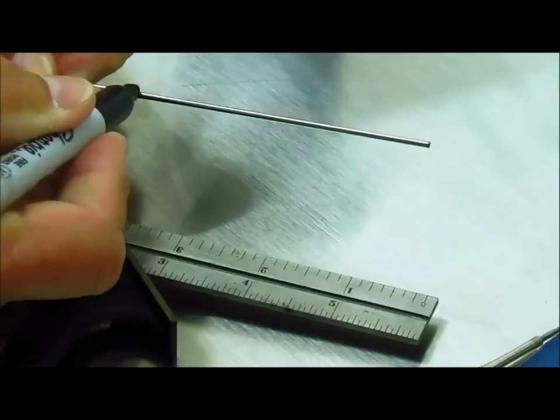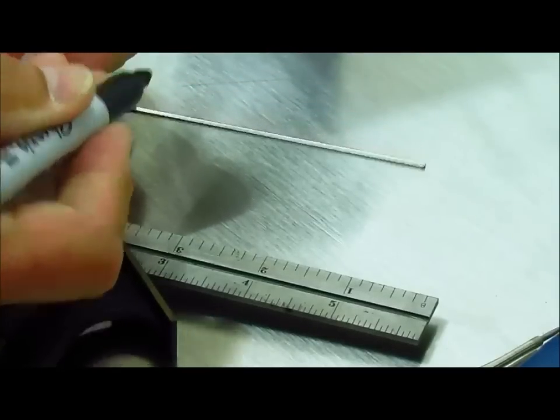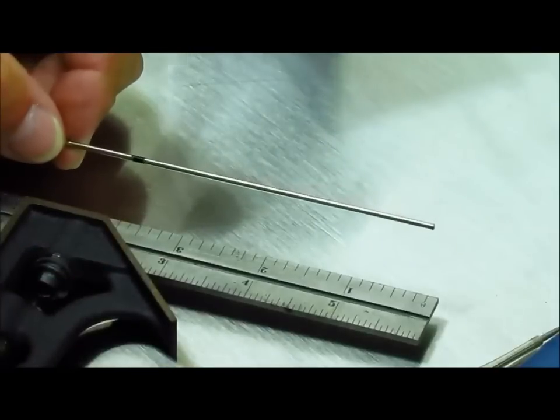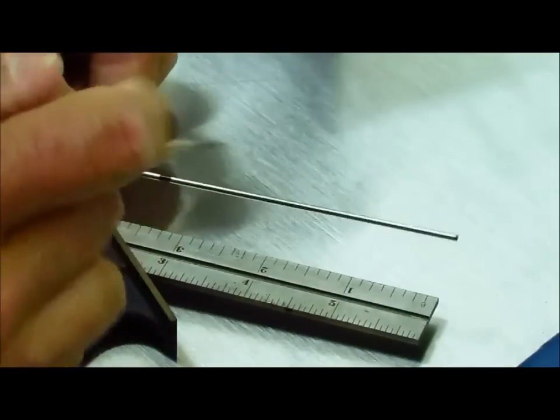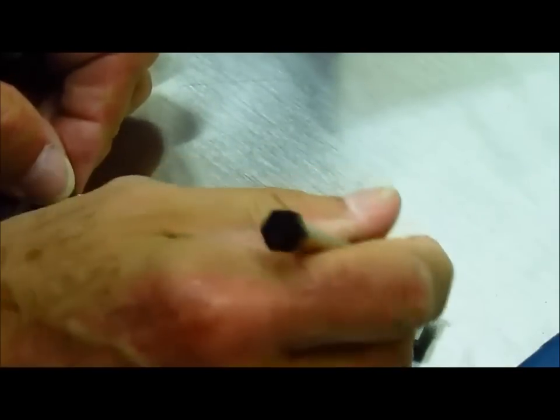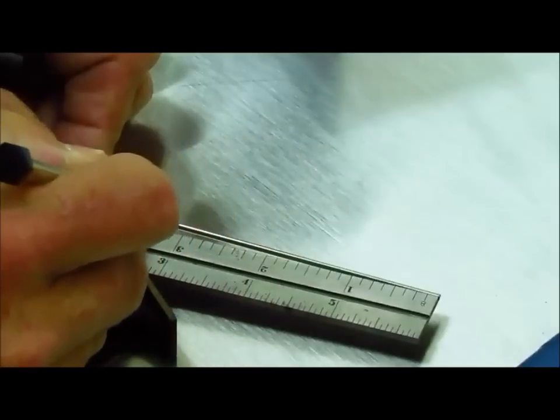So we're going to take the Sharpie pen and we're going to darken this whole area and then we're going to take a scribe and put a very precise mark at three and a half inches.